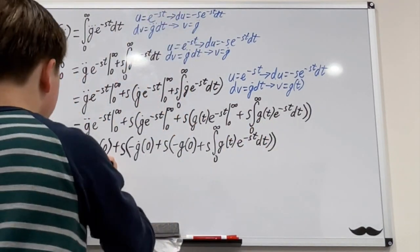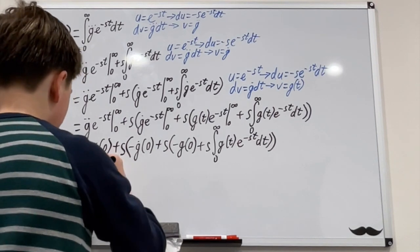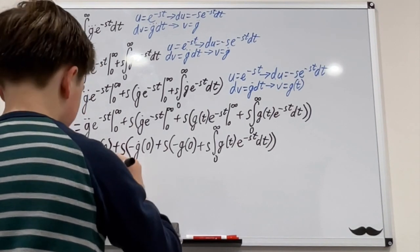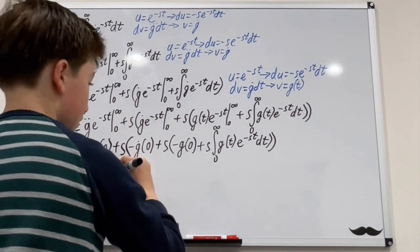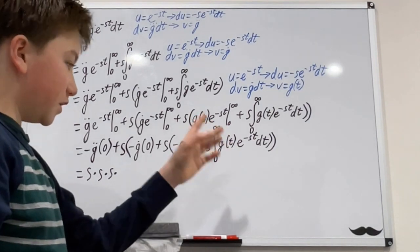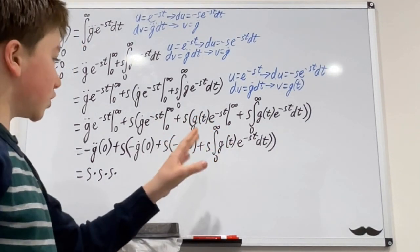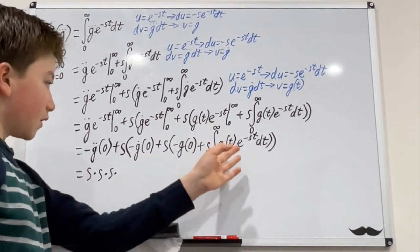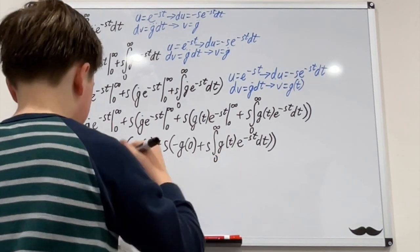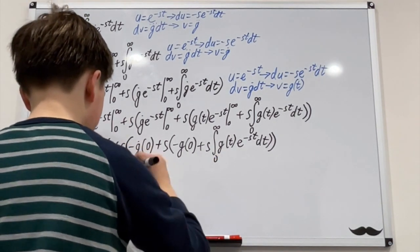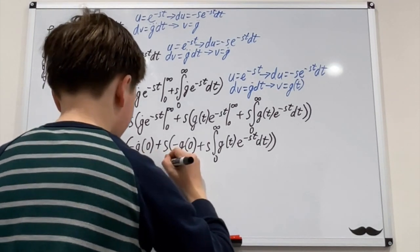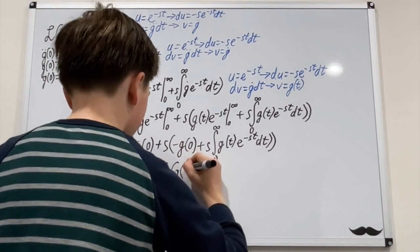Plugging in the initial conditions, we get s times s times s times this integral. But this integral is by definition the Laplace transform of lowercase g of t, so we'll just put capital G of s. So we're left with s cubed times G of s.